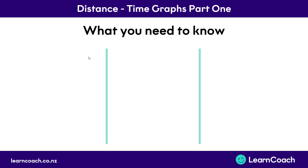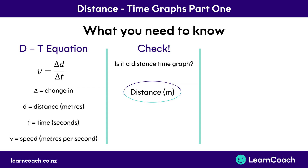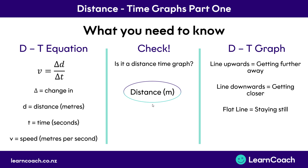To summarise what you need from this video: know the distance-time equation (speed = distance ÷ time); always check that distance is on the vertical axis and time on the horizontal axis; and remember that an upward line means the object is getting further away, a downward line means it's getting closer, and a flat line means it's standing still. In another video we'll cover the more complex skills for distance-time graphs — go watch that one if you want the higher marks. Thanks for watching!